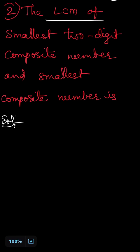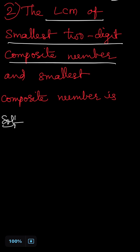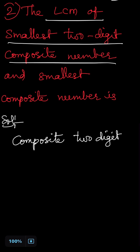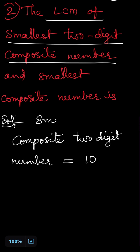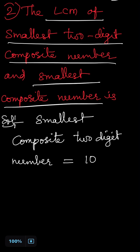The question asks for the LCM of the smallest two-digit composite number and the smallest composite number. The smallest two-digit composite number is 10.